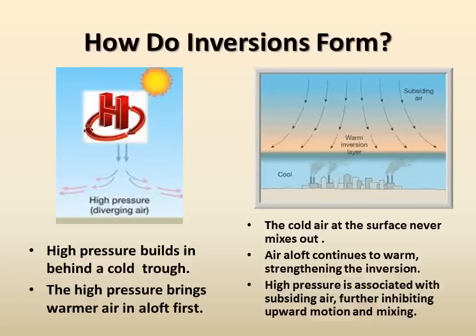Typically, thermal inversions will form when high pressure builds into the region behind a cold trough. Warmer air moves in aloft first, trapping the remnant cold air in the valleys. As the high pressure strengthens, the cold air aloft continues to warm, which strengthens the inversion layer. High pressure is also associated with subsiding air, further inhibiting upward motion and mixing.